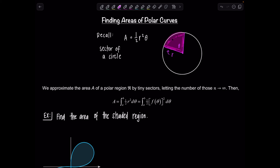In calculus, the formula we use when we have a polar curve and want to find the area of a specific region defined using polar coordinates is the integral from alpha to beta of one-half R squared d-theta. The idea is we chop the polar region into tiny sectors — tiny little wedges — take infinitely many of them, and in the limit we get this beautiful definite integral.